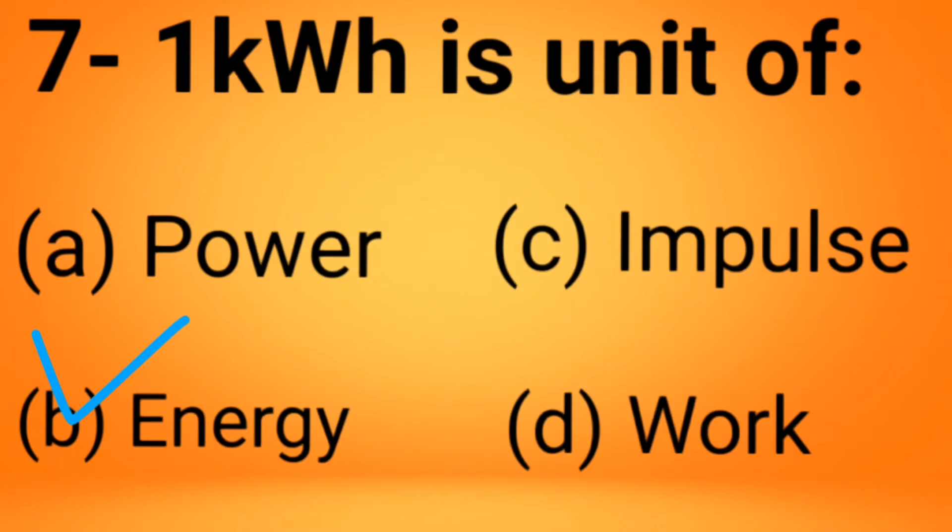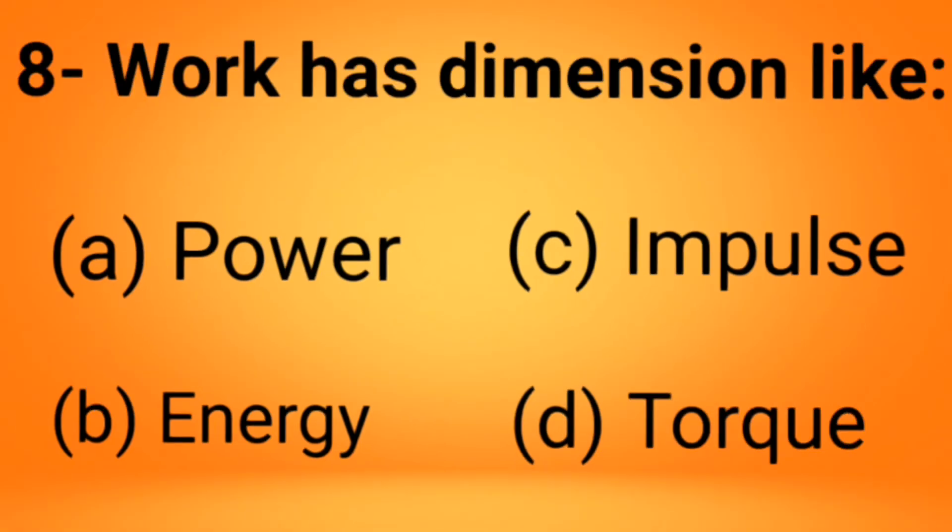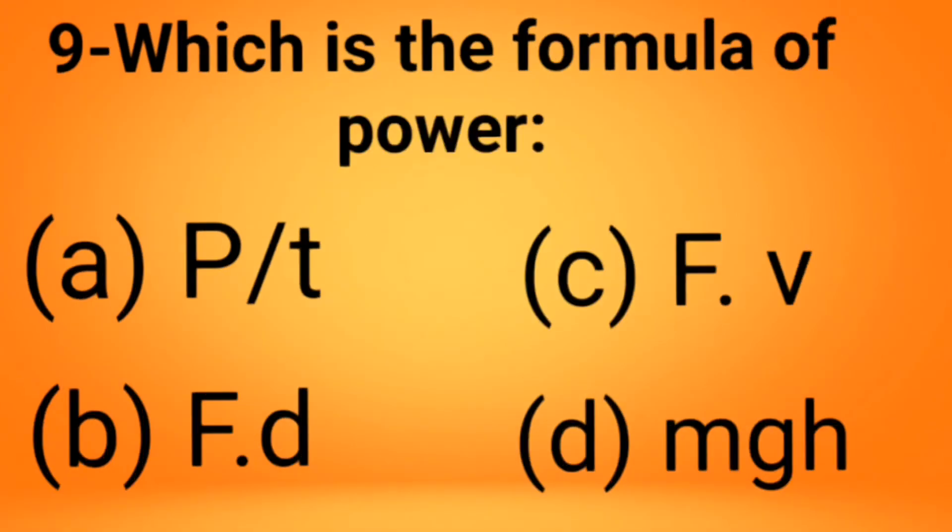The next MCQ: Work has dimension like power, impulse, energy, or torque? When we solve the dimension of work, we get to know that the answer is torque. It has the same dimension as torque. The next MCQ: Which is the formula of power: power over t, F · v, F · d, or mgh? The answer is F · v.